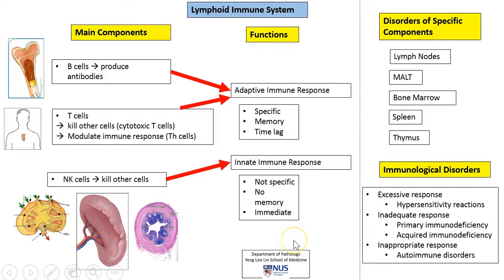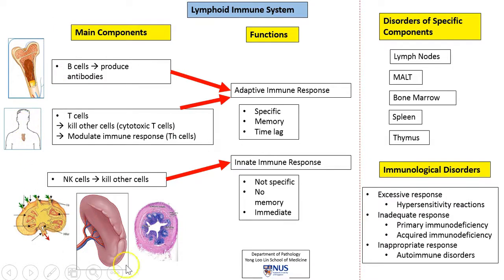So this is a very big picture overview of the lymphoid immune system. If you remember it in terms of the components, the types of lymphoid tissue — primary and secondary — their main functions, and the main pathologies in the different compartments, this will help you to understand this topic better.